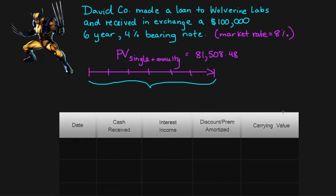We'll pop up this amortization schedule and go about filling it out. We issued this note on January 1st, 2015, so the day is the 1st, the month is the 1st, and the year is 2015. How much cash did we receive at this point? Well, we received none because no time has passed and we receive interest at the end of the year, so we're only going to be reporting the carrying value right now, which is $81,508.48.